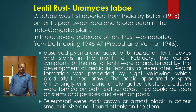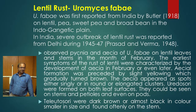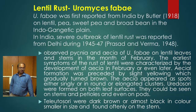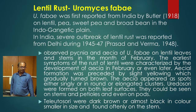You can observe the pycnia and aecia of Uromyces fabae. Uromyces fabae is an autoecious rust, having pycnia and aecia on lentil leaves and stems in the month of February. The earliest symptoms were characterized by development of aecia in February or even later. Aecial formations were preceded by slight yellowing, which gradually turned brown. The aecia appeared as spots either singly or in round or elongated clusters. Uredosori were formed on both leaf surfaces and could be seen on stems, petioles, and even on pods. The teliospori were dark brown to almost black in color, smaller in size.